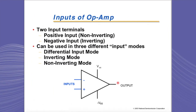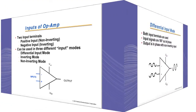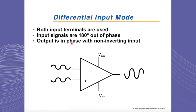Op-amps have two input pins: one is non-inverting, or the positive pin, and the other is inverting, or the negative pin. In general, op-amps can be set up in three different input modes: differential input mode, inverting input mode, and non-inverting input mode.